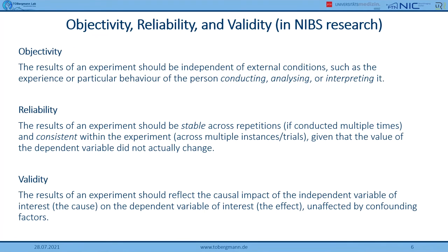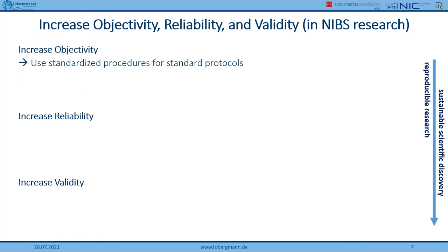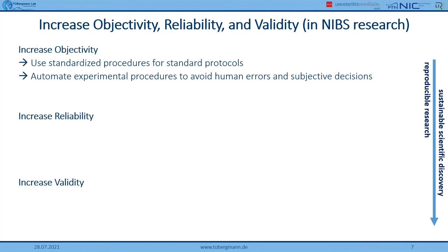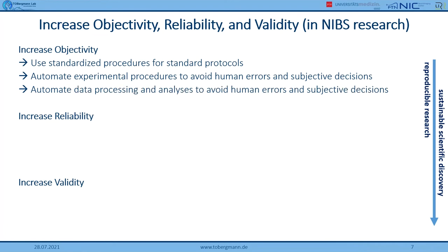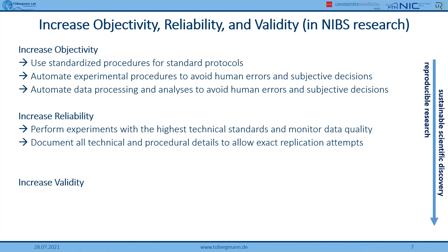To improve this trinity — objectivity, reliability, and validity, which build upon each other — we should use standardized procedures for standard protocols, automate experimental procedures to avoid human errors and subjective decisions, and automate data processing and analysis. To increase reliability, we should perform experiments according to the highest technical standards, monitor data quality online, document all technical and procedural details to allow exact replication attempts, and openly share protocols for both data collection and processing. You can also reliably measure something that is completely irrelevant or wrong again and again, so validity matters too.